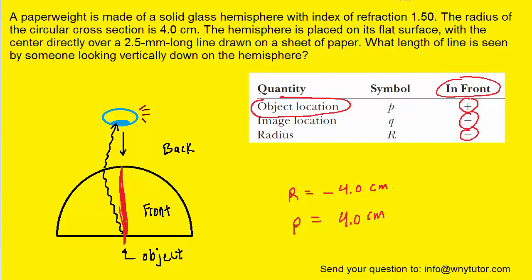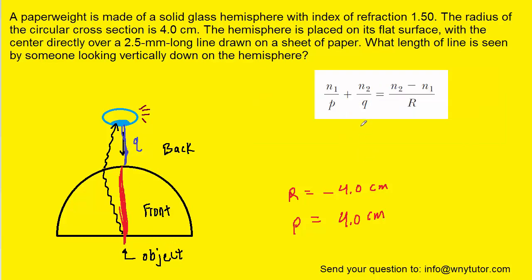What we can first calculate is the image distance, the q value. That would be simply the distance from the surface to where the image is going to form, which in this case would be at the person's eye. We can calculate q using the following formula. And in order to plug everything in, we need to know what n1 and n2 are.